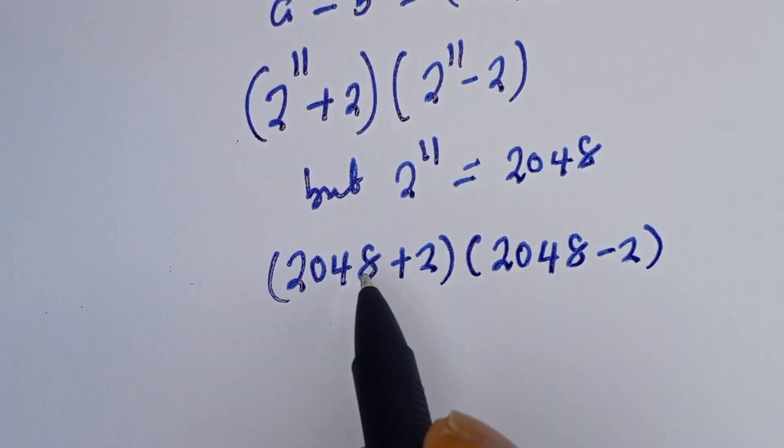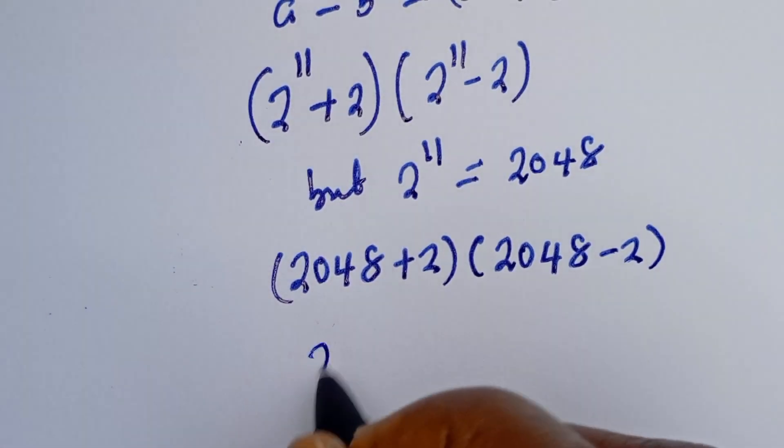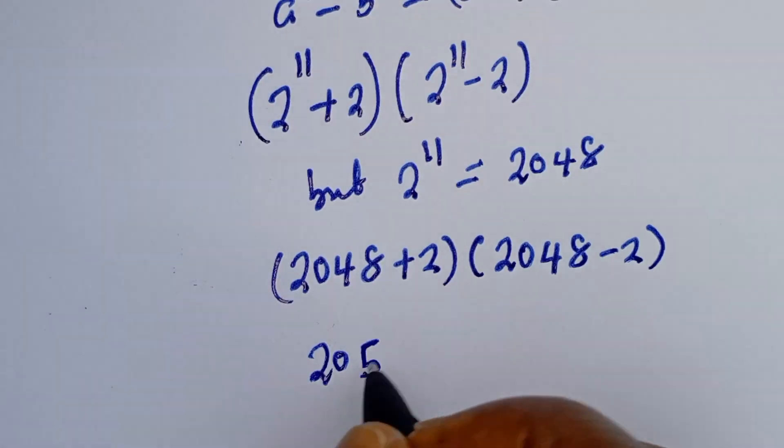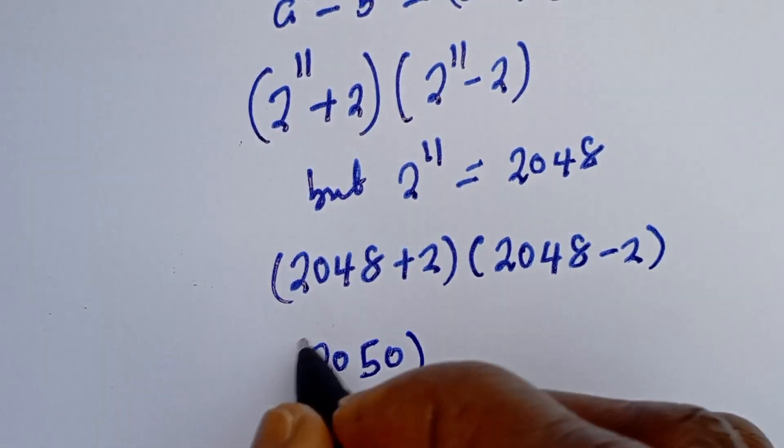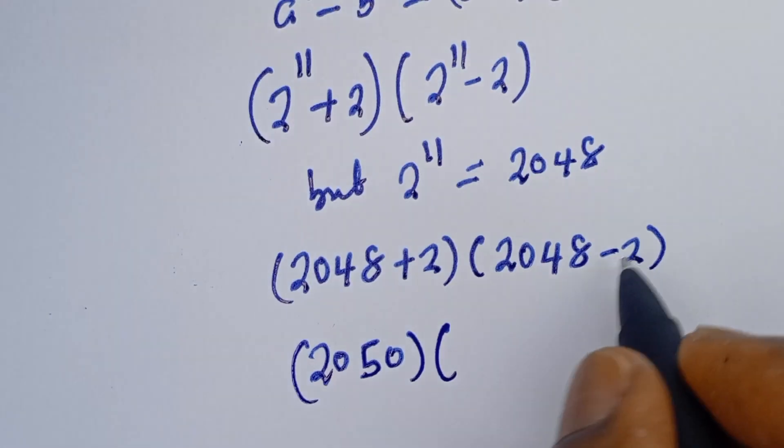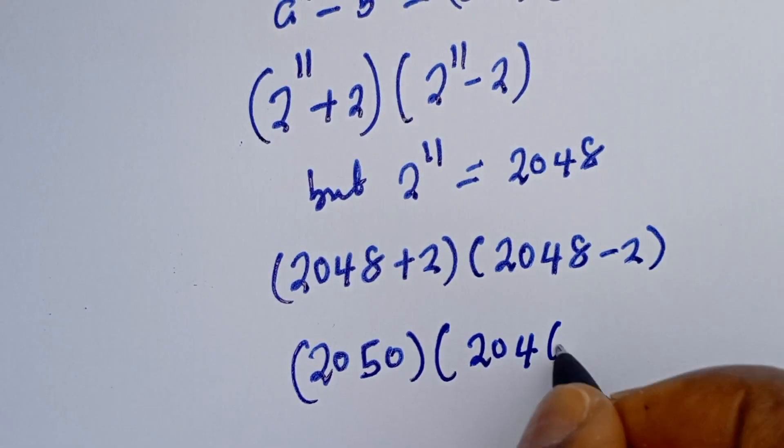So 2048 plus 2 is 2050 bracket 2048 minus 2 is 2046.